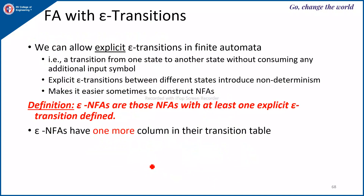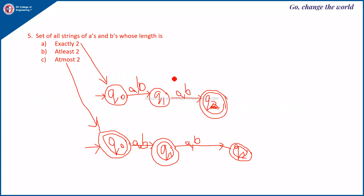Next is finite automata with epsilon transitions. Epsilon is nothing but a null transition. We can allow explicit epsilon transitions in finite automata — that is a transition from one state to another without consuming any input symbol. Previously for NFA or DFA your machine changed only after taking input A or B.